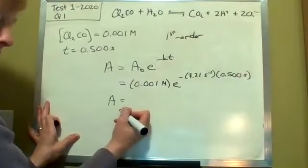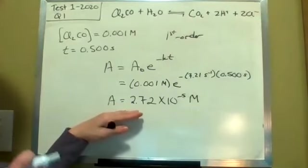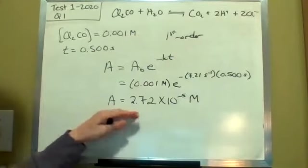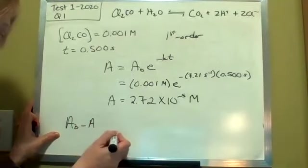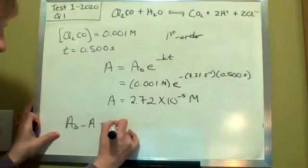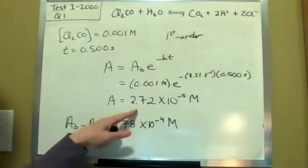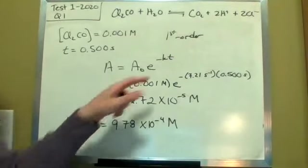you're going to end up with a value here of 2.72 times 10 to the minus five molar. Now this is not your final answer. This is how much is remaining after 0.5 seconds. The question wants to know how much has reacted after 0.5 seconds. So that means you're going to have to get A naught minus A to figure out how much is reacted. So that value there should be 9.78 times 10 to the minus four molar. Now keep in mind these values are going to change a little bit depending on what experiments that you used to find K.